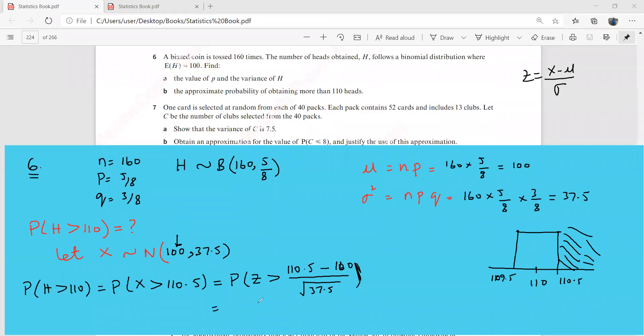So 110 minus the mean, which is 100, over the square root of this 37.5. So let's see what do we get from here. Let me find that 110.5 minus 100 and divided by the square root of. Now here, normally people make a mistake here. They forget to take the square root of this variance here. This is going to be 1.715. This is probability that z is greater than 1.715.